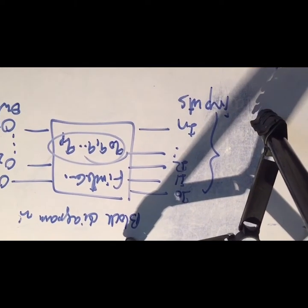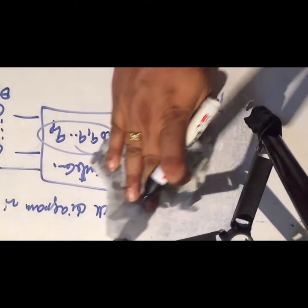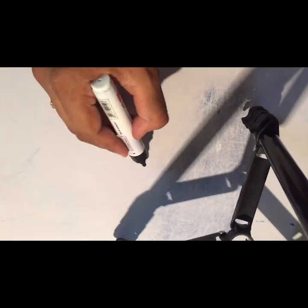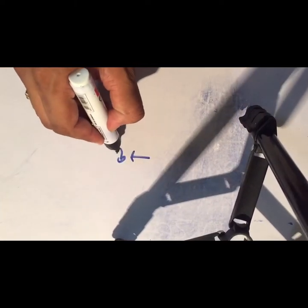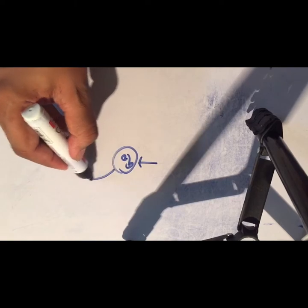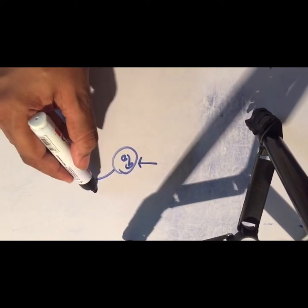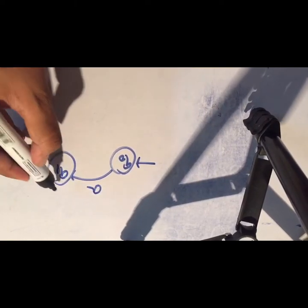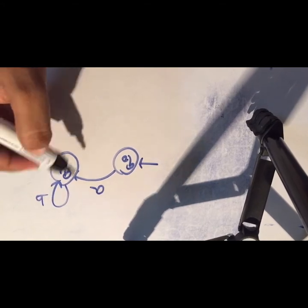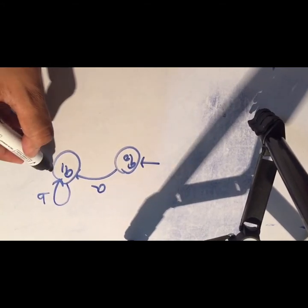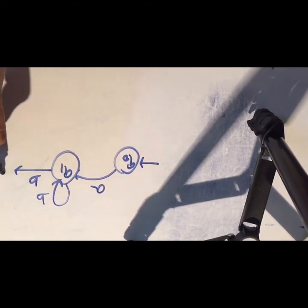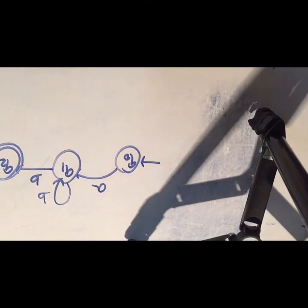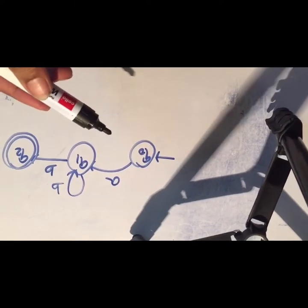Consider a situation of automata: suppose this is the initial state of a machine. When we apply input 'a', it goes to q1. When we apply input 'b', it comes back to q1. When we apply 'b' again it goes to q2, and so on.